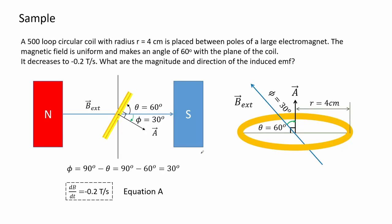Here we have an example. A 500-loop circular coil with a radius of 4 cm is placed between the poles of a large electromagnet. The magnetic field is uniform and makes an angle of 60 degrees with the plane of the coil, and it decreases at negative 0.2 tesla per second. We need to find the magnitude and direction of the induced EMF. We see that the assumed area vector is pointed toward the south pole, and the solenoid is tilted by 60 degrees. The angle phi between the area vector A and the external magnetic field is 90 minus 60, giving phi equal to 30 degrees.